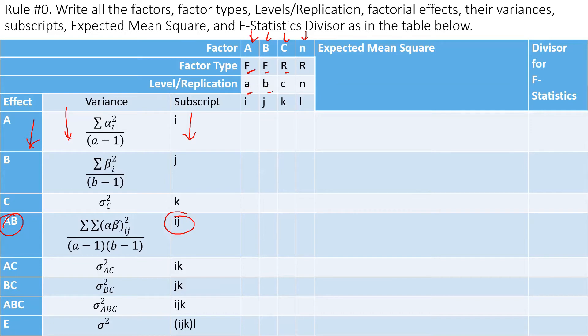Write down all the levels A, B, C, and for replication N. And of course, the experimental error or replication, they're random. Now their level subscript I, J, K, like that. And then have a column for mean square and a column for F statistics.